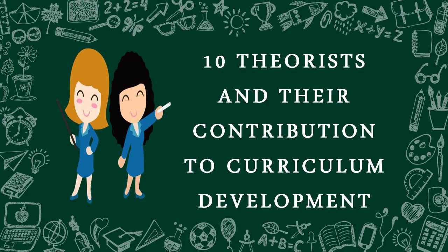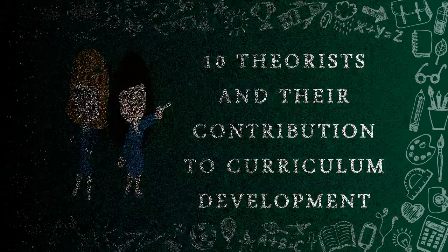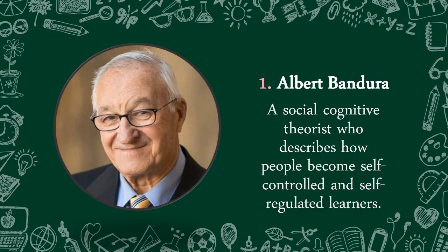Our first Theorist is Albert Bandura. He is a social cognitive theorist who describes how people become self-controlled and self-regulated learners.